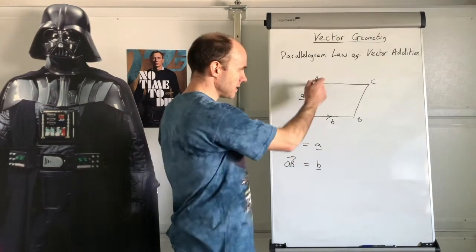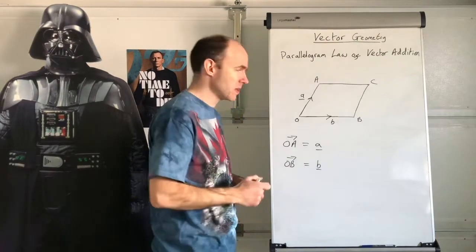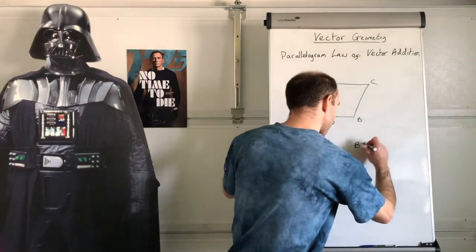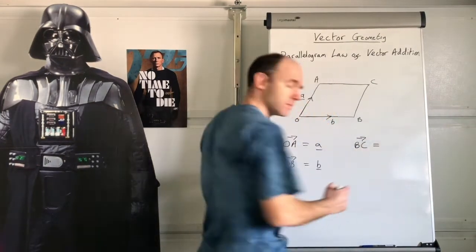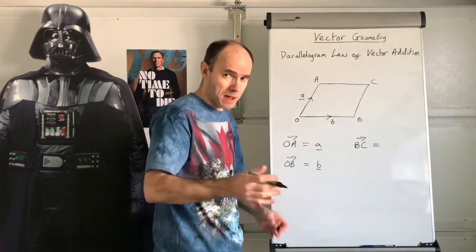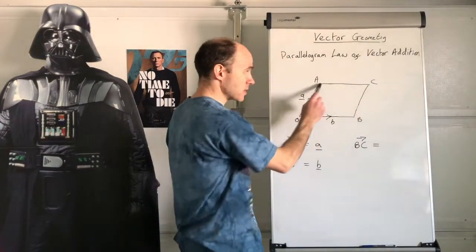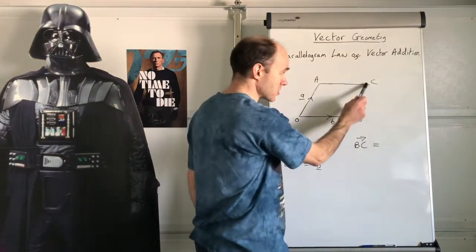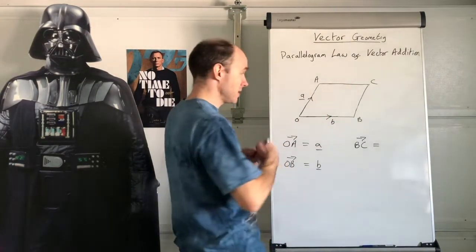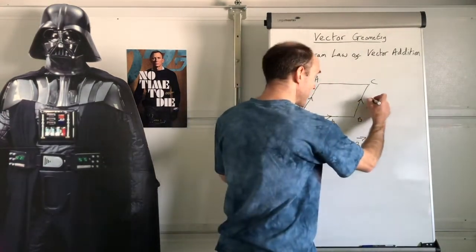So OA is a and OB is b. Now, what is vector BC? BC is also going to be a — because this is a parallelogram, that length equals that length and that direction equals that direction. Vectors have both magnitude and direction, so they are the same: parallel and equal in length. So BC equals a.